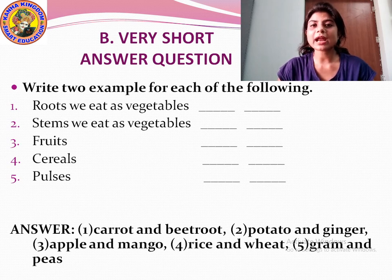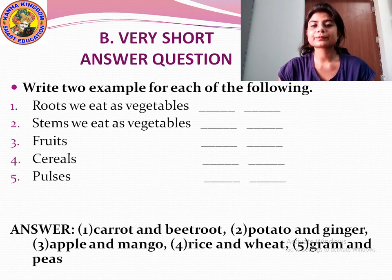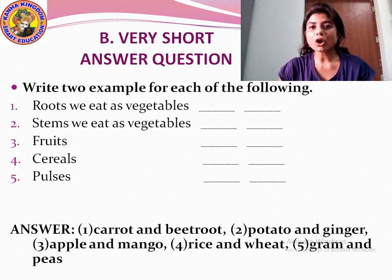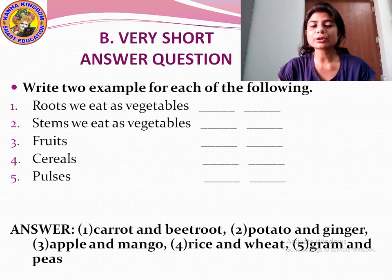(4) Cereals — rice and wheat. (5) Pulses — gram and peas. The answers are written below — you can see and write them.